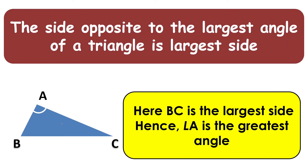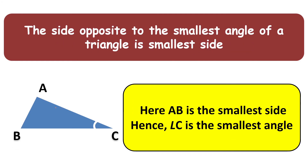The side opposite to the largest angle of a triangle is the largest side — if an angle is opposite to the largest side BC, that angle must be the largest angle. Similarly, the side opposite to the smallest angle is the smallest side — AB is the smallest side and its opposite angle, angle C, will be the smallest angle.